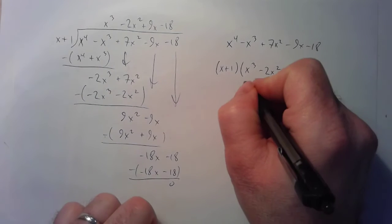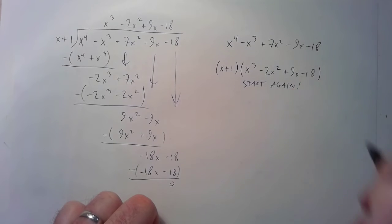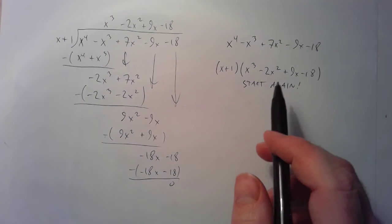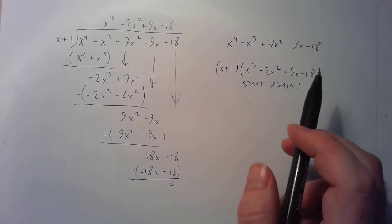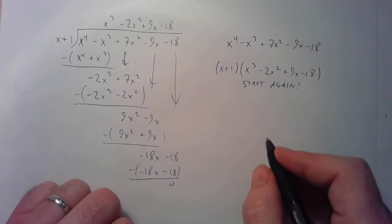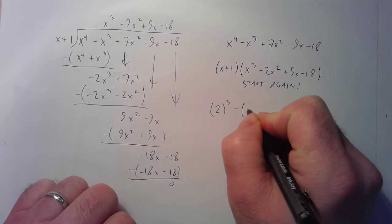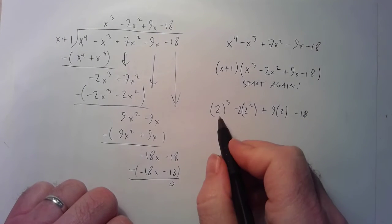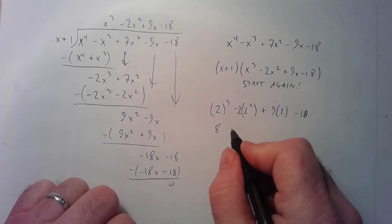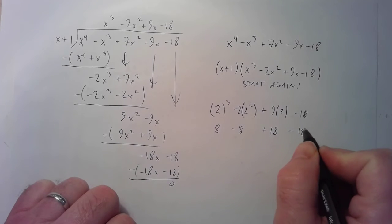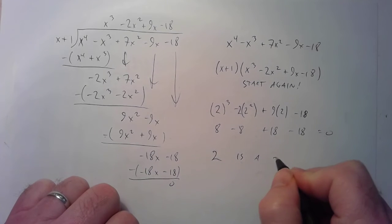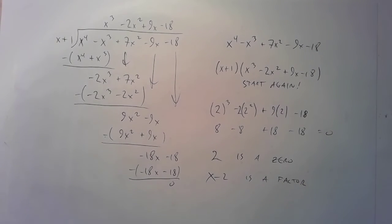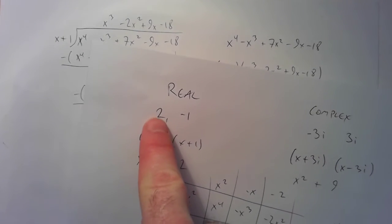So x to the fourth minus x cubed plus 7x squared minus 9x minus 18, having negative 1 as a zero and x plus 1 as a factor, means it can be written as x plus 1 times the cubic quotient we just found. Now we can start again with this cubic. I could go through the steps of guessing plus or minus 2, plus or minus 3, plus or minus 6, but since I already know the answer is 2, I'm just going to pretend I found it right away. I already knew it would be a zero and that x minus 2 would be a factor — this is just what it looks like when you're solving it.